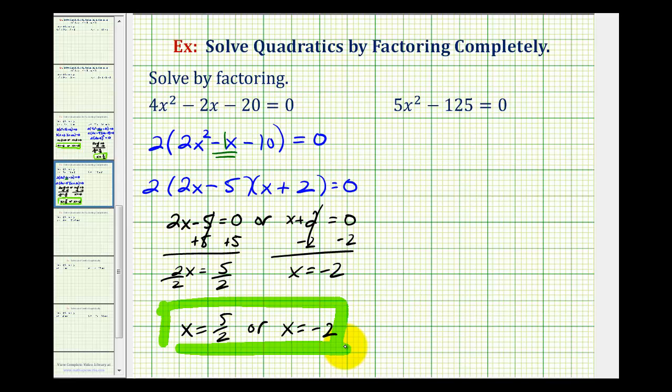Let's take a look at our second example. Here, we have 5x squared minus 125 equals 0. Again, the first step is to look for the greatest common factor, which in this case would be 5.